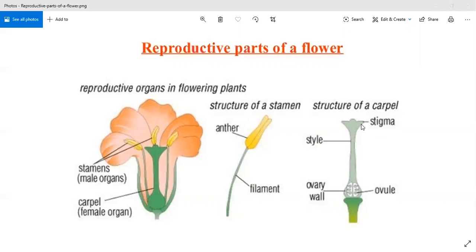Stigma receives the pollen grains. It has a sticky surface, and pollen grains get stuck to it during pollination.